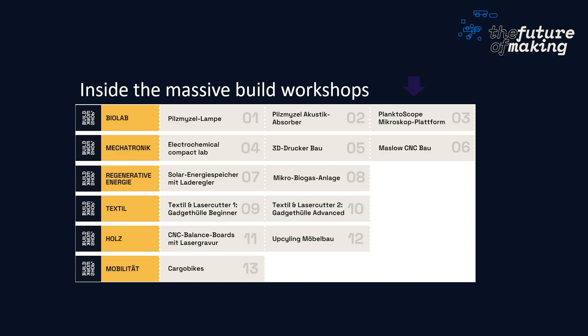With these massive build workshops we can show that within Hamburg, with citizens who have some skill — or even no skill — in using fab lab machines, we can build many things: cargo bikes, a solar energy management system, an electrochemical compact lab, and products from the bio lab like the lamp you might have seen. With this we try to have a showcase.